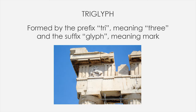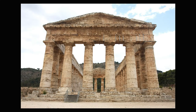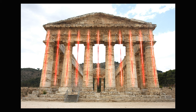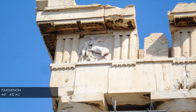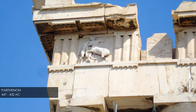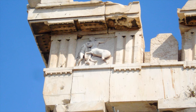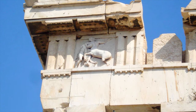Triglyph is a word formed by the prefix tri, meaning three, and the suffix glyph, meaning mark — so literally, triglyph means three marks, and it's exactly what we can see on the decoration. Their origin probably came from the time when temples were built in wood, and the triglyphs were wood planks used to cover the beams of the roof. Not by chance, every other one is aligned directly over the columns. The space between two triglyphs is filled with the metope, which usually was decorated with beautiful reliefs, as you can see in this example from the Parthenon.